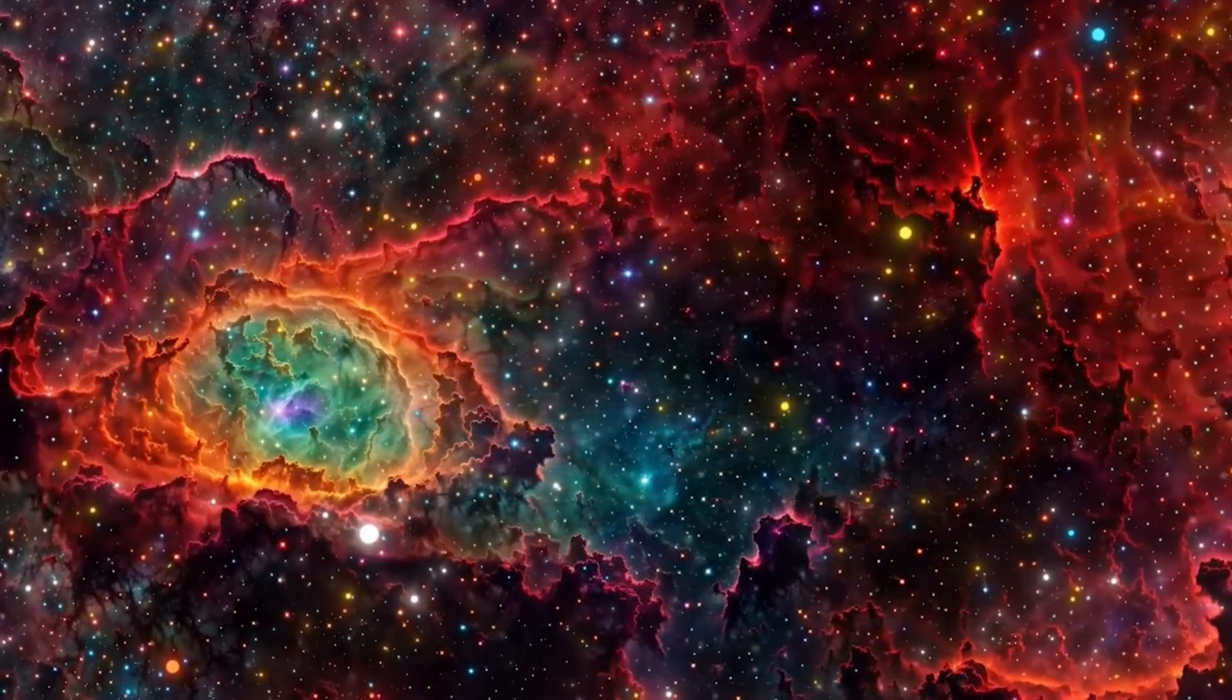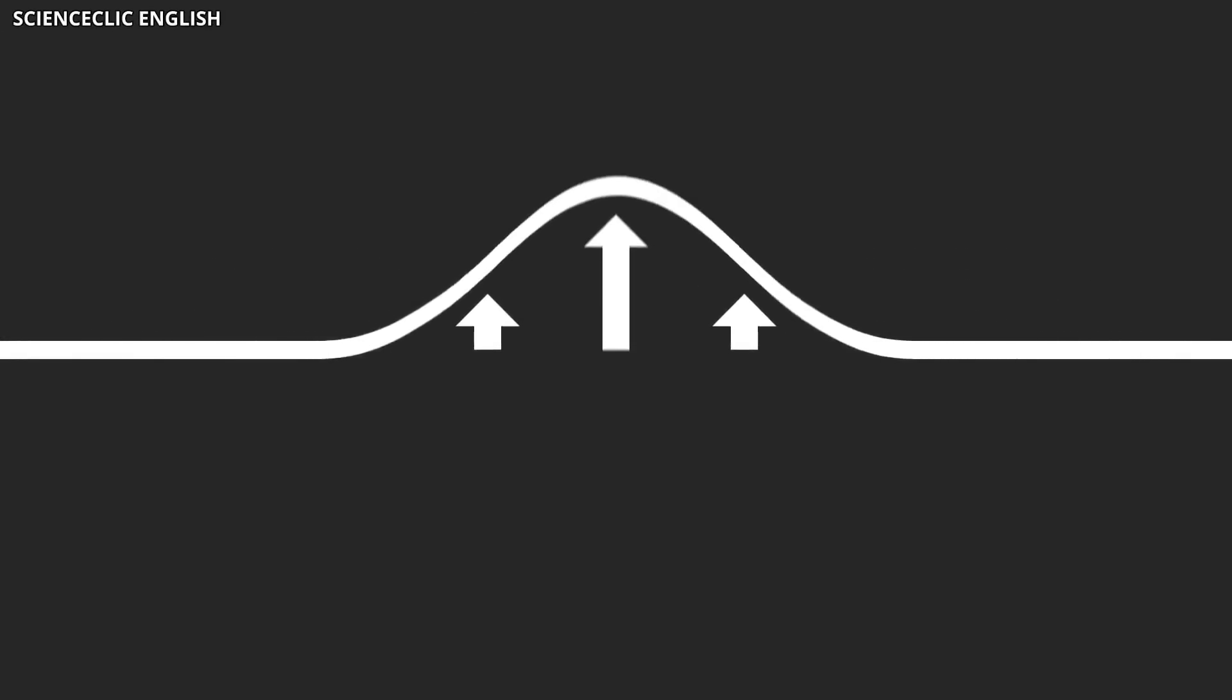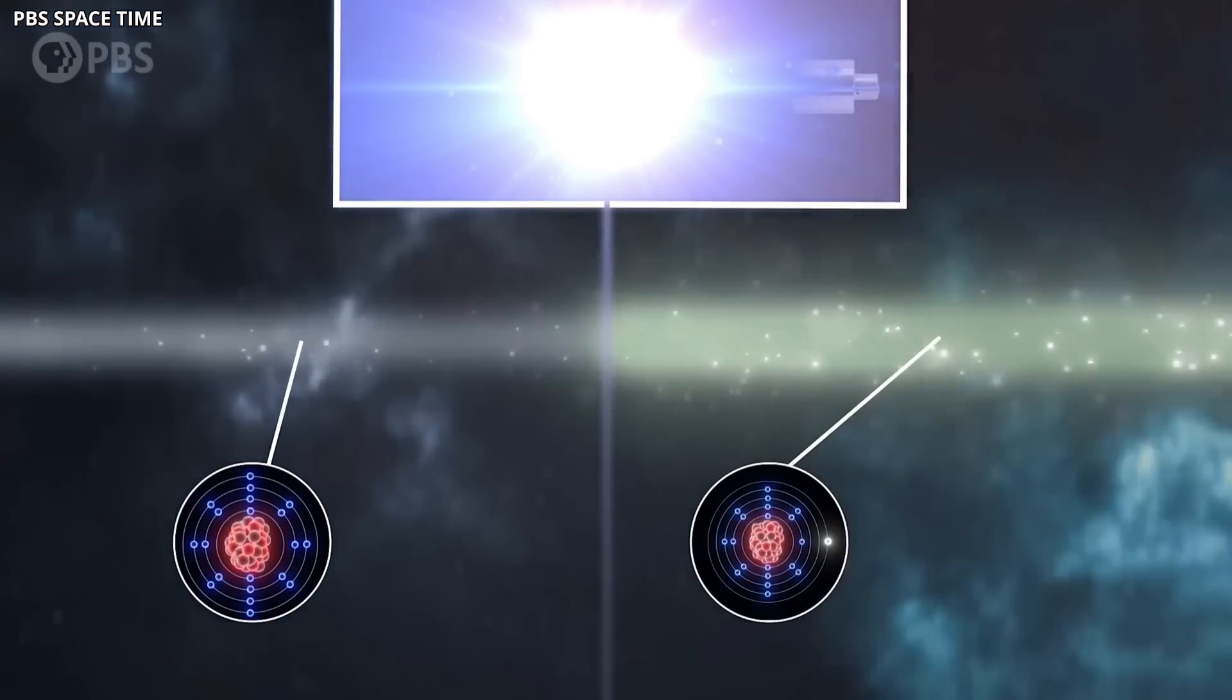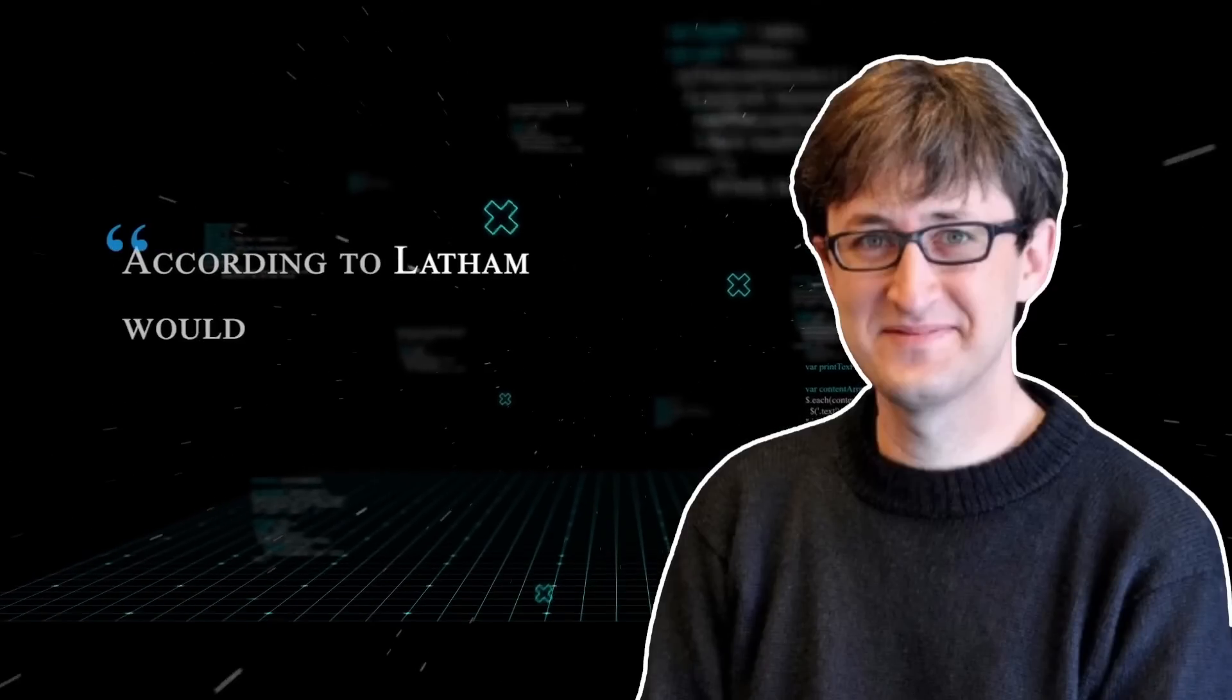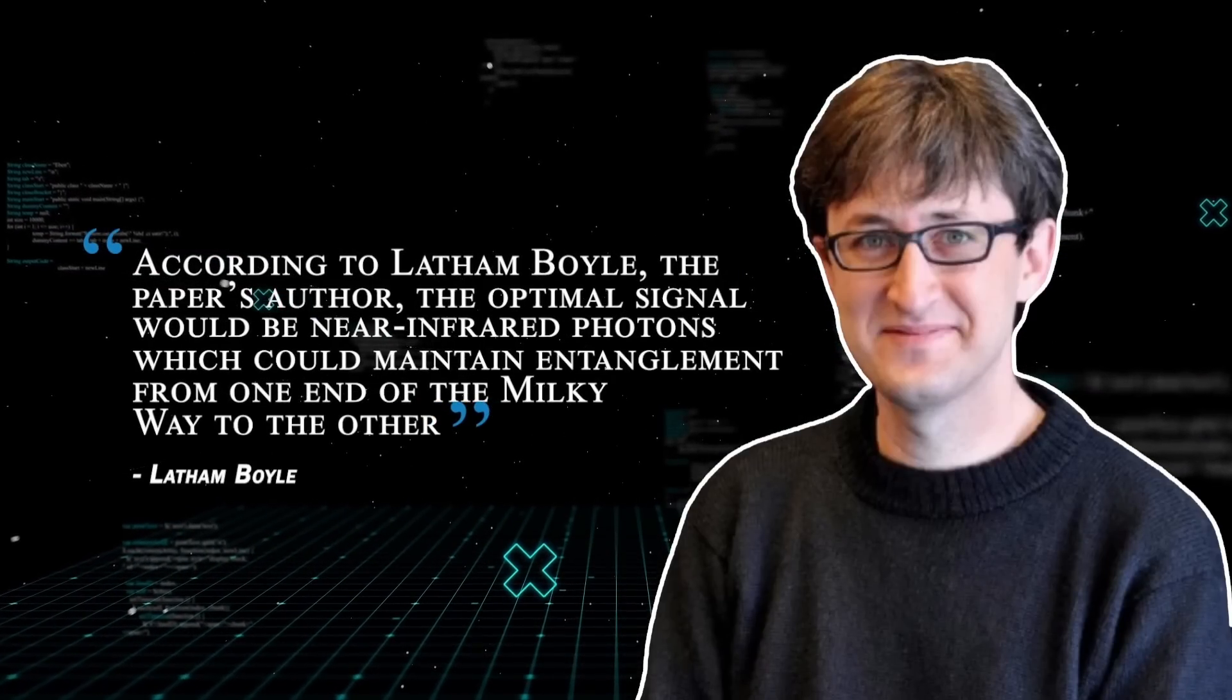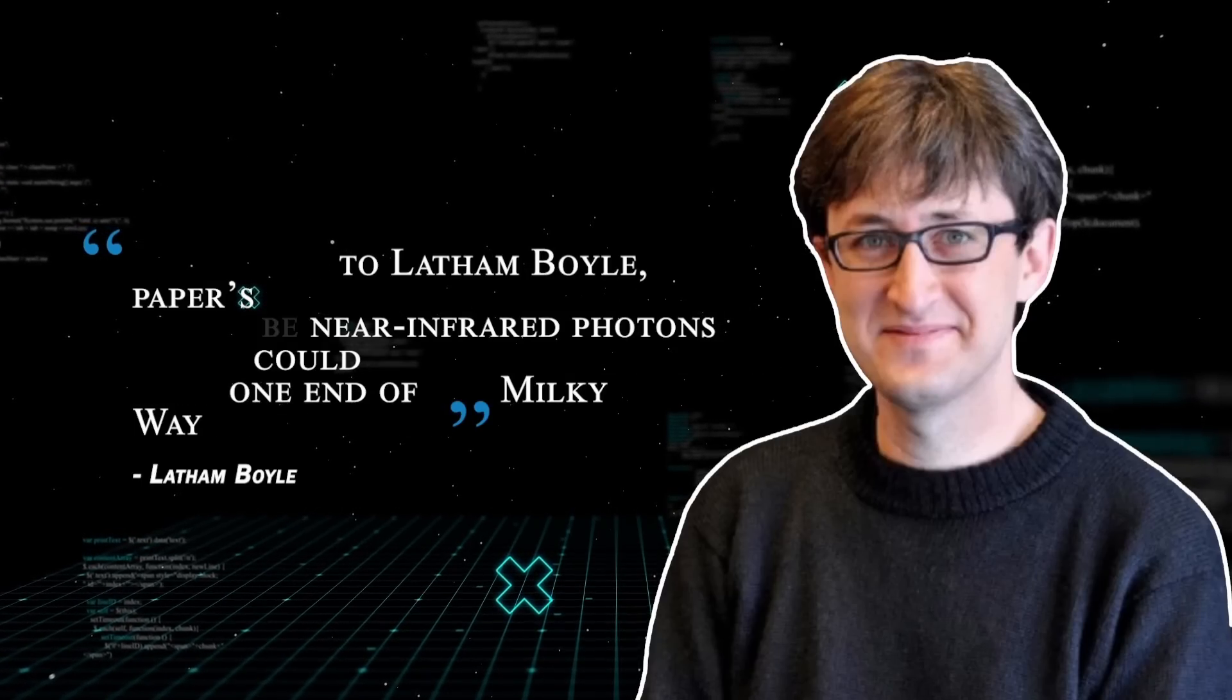If they collide with atoms in the interstellar gas, it would cause a loss of coherence and destroy the signal. The likelihood of this happening depends on the photon's wavelength. If they're too long or too short, they'll likely be scattered or absorbed, either in our atmosphere or during transit. According to Latham Boyle, the paper's author, the optimal signal would be near-infrared photons, which could maintain entanglement from one end of the Milky Way to the other.